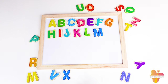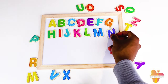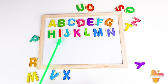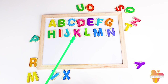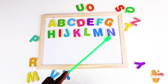The next letter we have is Big N. Here is Big N! So for the second row we have Big H, Big I, Big J, Big K, Big L, Big M, and Big N.